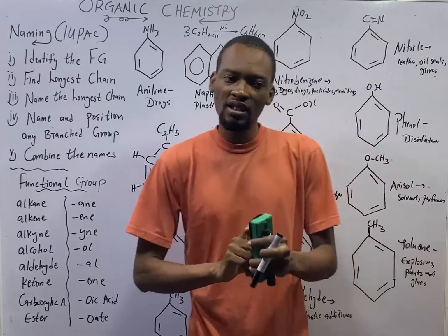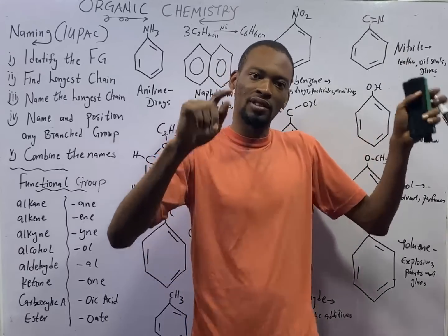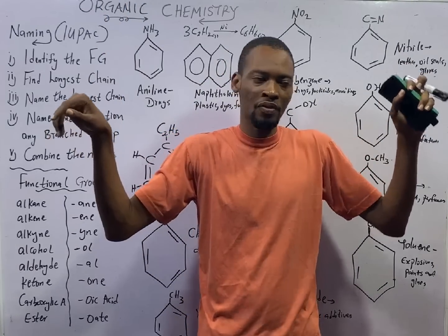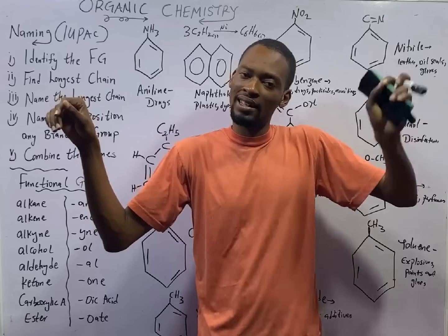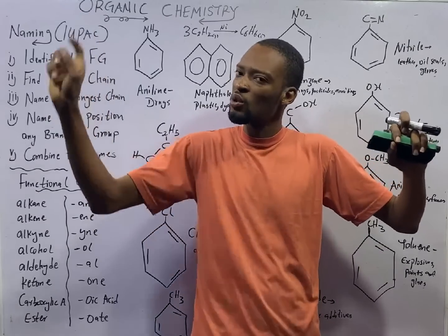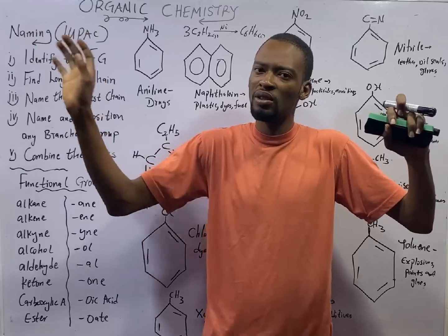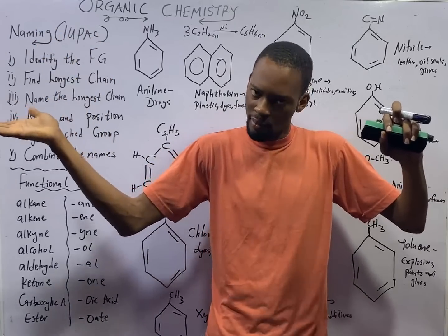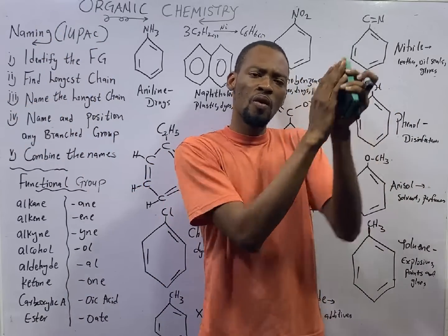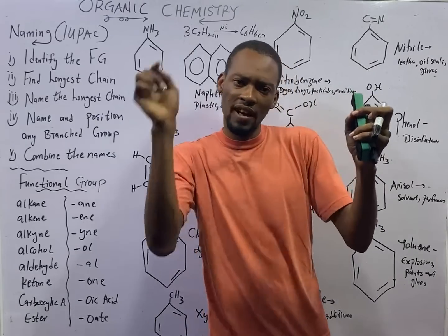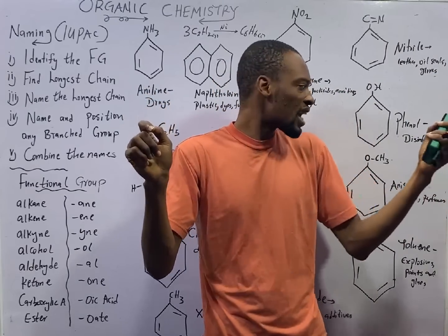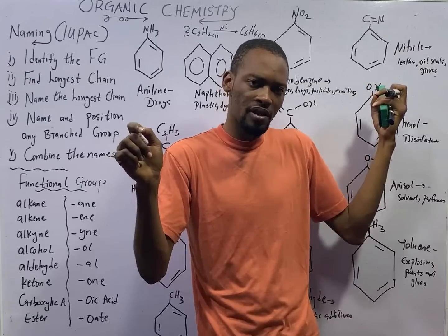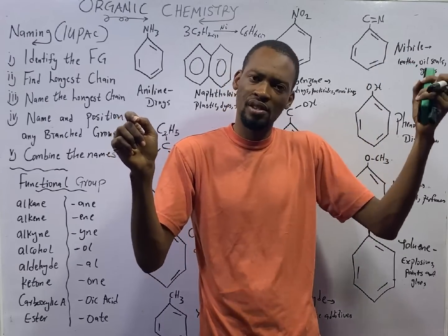Organic chemistry is divided into hydrocarbon and non-hydrocarbon. Hydrocarbons are compounds that contain carbon and hydrogen alone, while for non-hydrocarbon, they contain carbon, hydrogen and other elements are present. Under hydrocarbons, it is divided into aliphatic and aromatic. Aromatic hydrocarbons are benzene and their derivatives, any compounds that have the benzene ring.